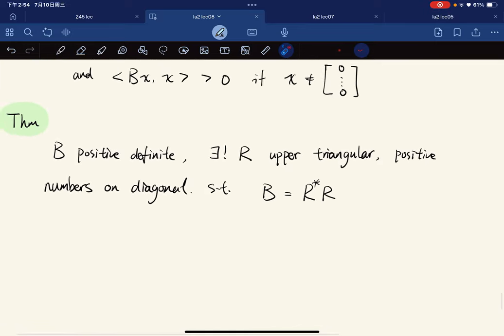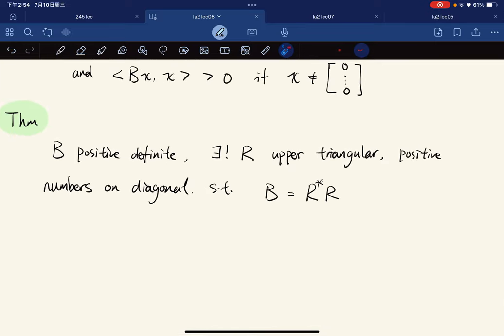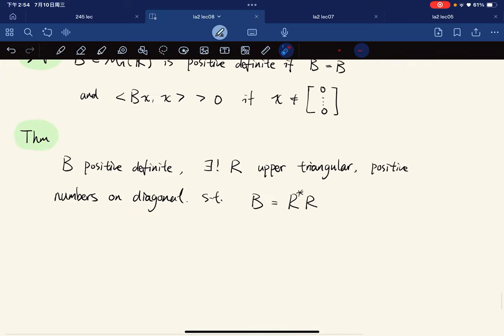The theorem is, the proof would be omitted, that for a positive definite matrix there is a unique upper triangular matrix with positive numbers on diagonal such that B equals R*R. And this is everything for this lecture.